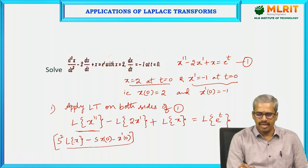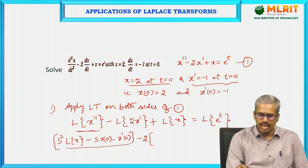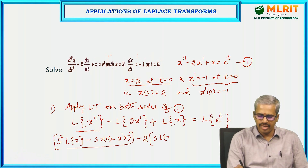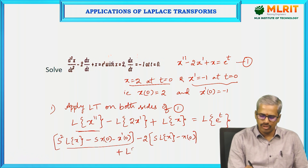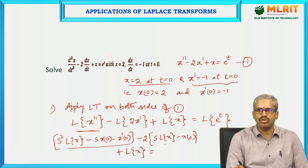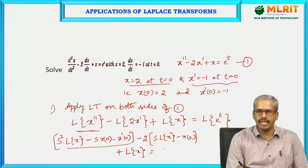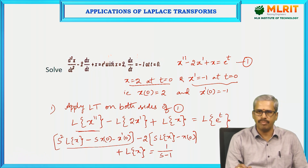So we have L{x''} minus 2 times L{x'}. L{x'} can be written as s·L{x} minus x(0). L{x} equals L{e^t}. What is L{e^t}? The formula for L{e^(at)} is 1/(s − a); here a equals 1, so this equals 1/(s − 1).